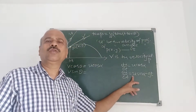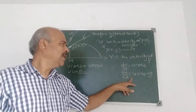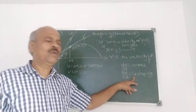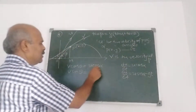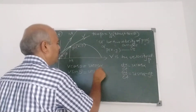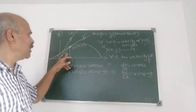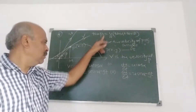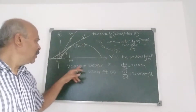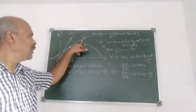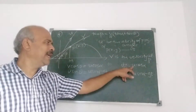From the derivation: dx/dt = u cos α and dy/dt = u sin α − gt. Since v is the velocity at P making angle θ with the horizontal, the horizontal component is v cos θ = u cos α ... (1), and the vertical component is v sin θ = u sin α − gt ... (2).